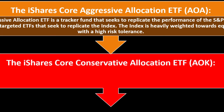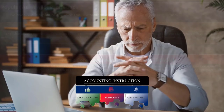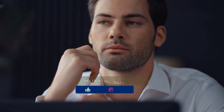The iShares Core Conservative Allocation ETF (AOK) is a tracker fund that seeks to replicate the performance of the S&P Target Risk Conservative Index. The fund invests in ETFs that seek to replicate the index, which is heavily weighted towards fixed income, targeting investors with a more conservative risk tolerance. People closer to retirement may seek this option, while those with long time horizons may prefer more aggressive funds.